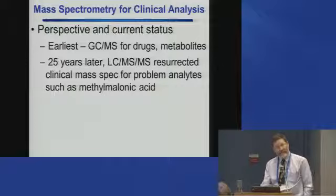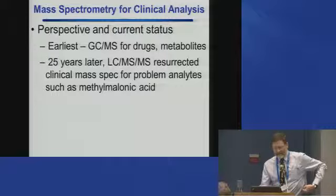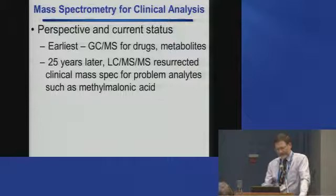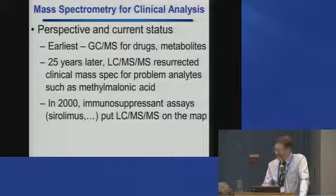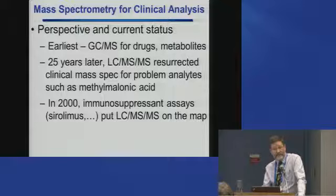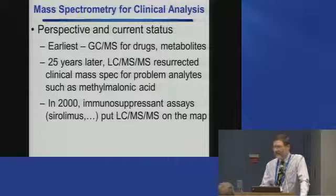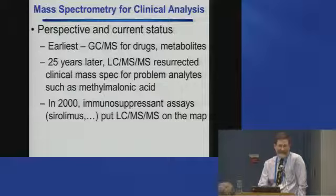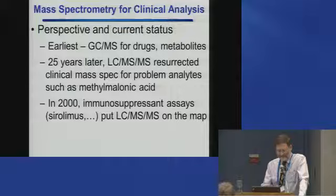LC-MS/MS addressed problem analytes that were hard to do with classic clinical analyzers. The first example may well have been methylmalonic acid, very difficult to do by classic methods. What really put LC-MS/MS on the map is immunosuppressant assays for tacrolimus — nobody can come up with any other way of measuring it, and it's very important for monitoring organ transplant patients. If you can do one by mass spec, you might as well do two, three, four, or five of them. It became standard to screen multiple immunosuppressants by LC-MS/MS, bringing modern mass spectrometry into the clinical laboratory.